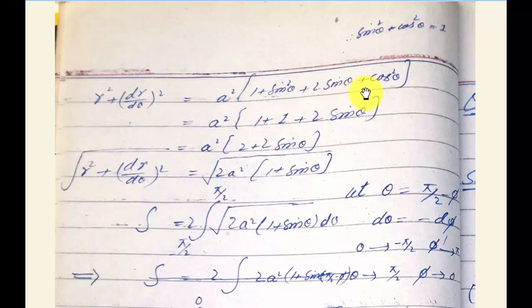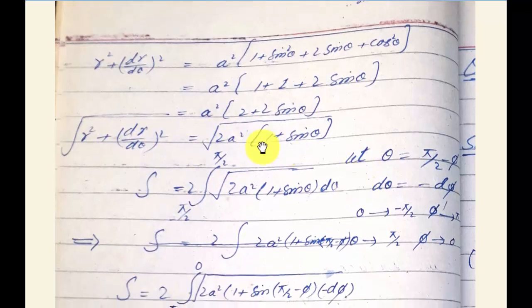r² = a²(1 + sin²θ + 2sin θ). Adding (dr/dθ)² = a²cos²θ, we get a²(sin²θ + cos²θ + 1 + 2sin θ) = a²(2 + 2sin θ). Taking common: 2a²(1 + sin θ). Taking square root on both sides.